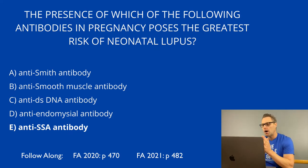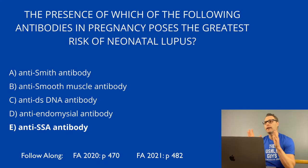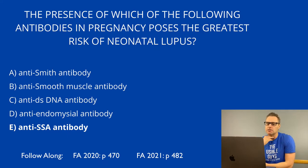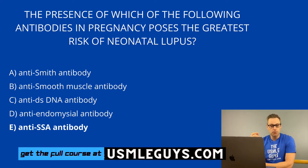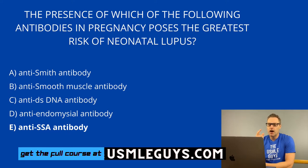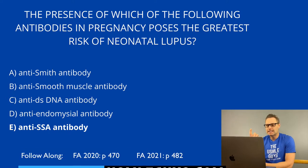In SLE, a deficiency of early complement proteins leads to a decrease in the clearance of immune complexes. We can remember the wide range of findings with the mnemonic RASH OR PAIN. R is for rash, typically described as discoid or malar. A is for arthritis — non-erosive arthritis. S is for serositis. H is for hematologic disorders. O is for oral or nasopharyngeal ulcers, usually painless. R is for renal disease. P is for photosensitivity. A is for anti-nuclear antibodies. I represents immunologic disorder — anti-double-stranded DNA, anti-Smith, and anti-phospholipid antibodies. N represents neurologic disorders such as psychosis or seizures.